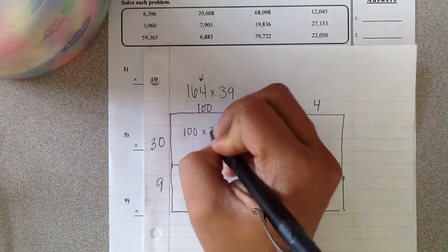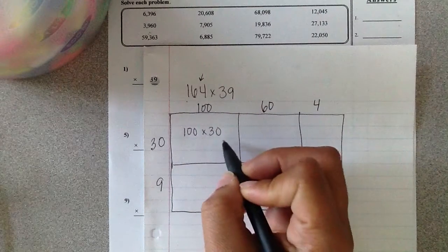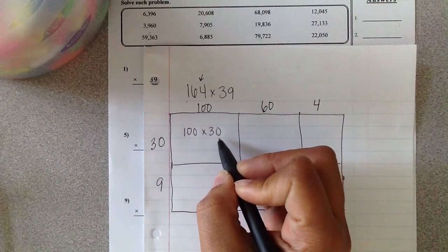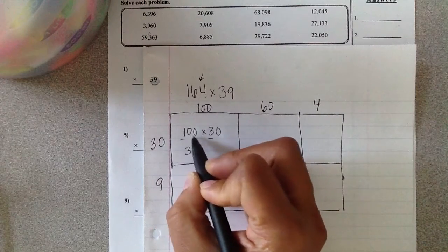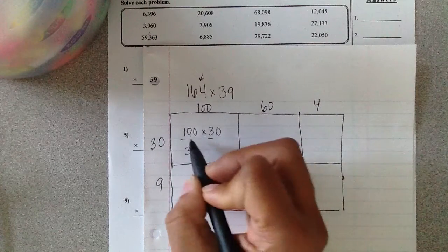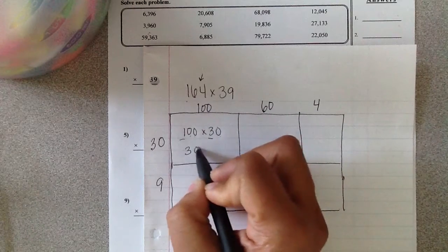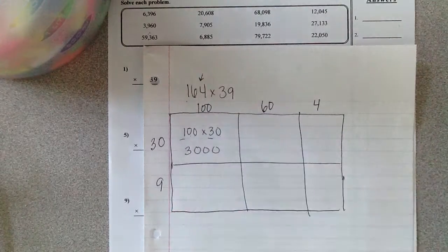I start with 100 times 30. I know that 0 is a powerful number, so if I do 3 times 1, that's 3, and all I have to do is add my zeros from my factors. I have one, two, three zeros. I'm going to add one, two, three zeros to my product.